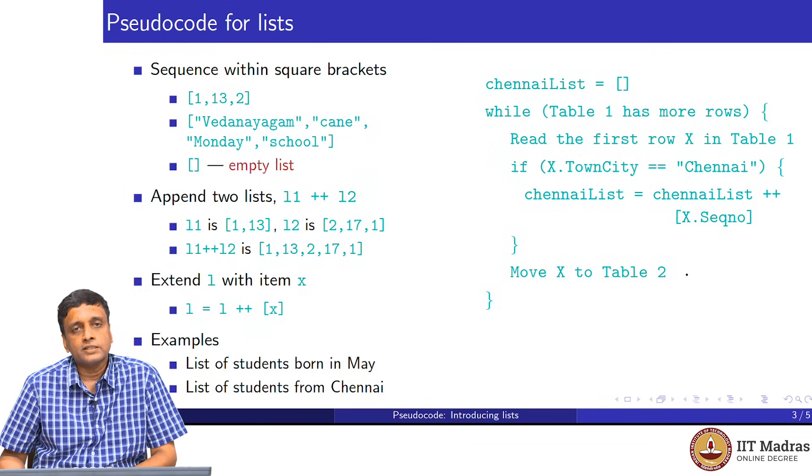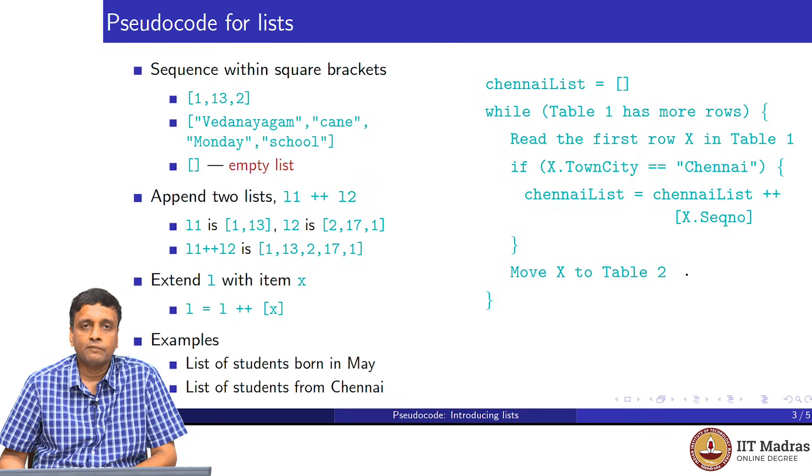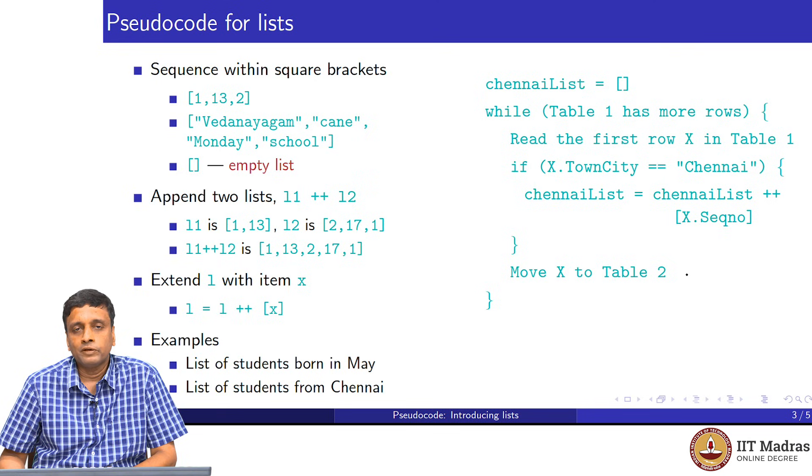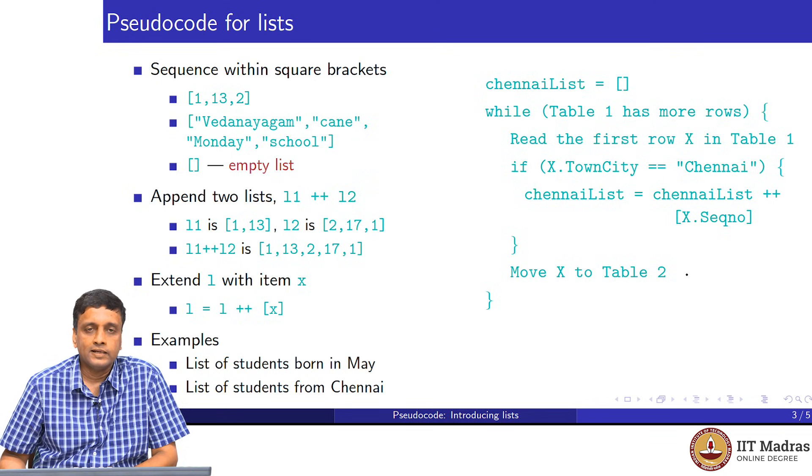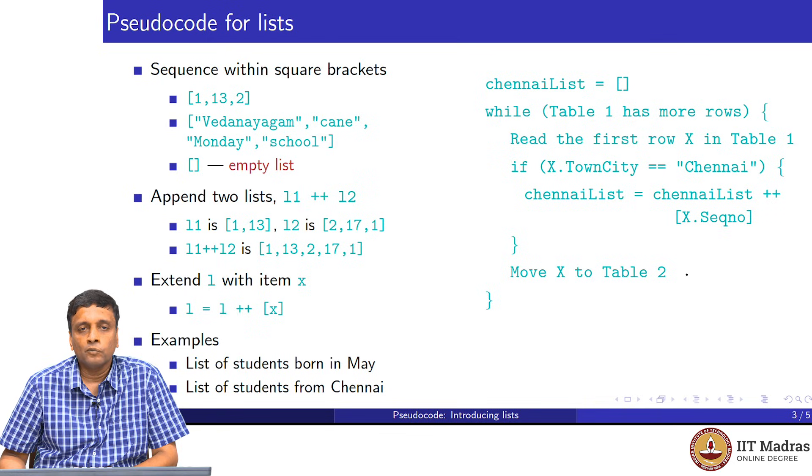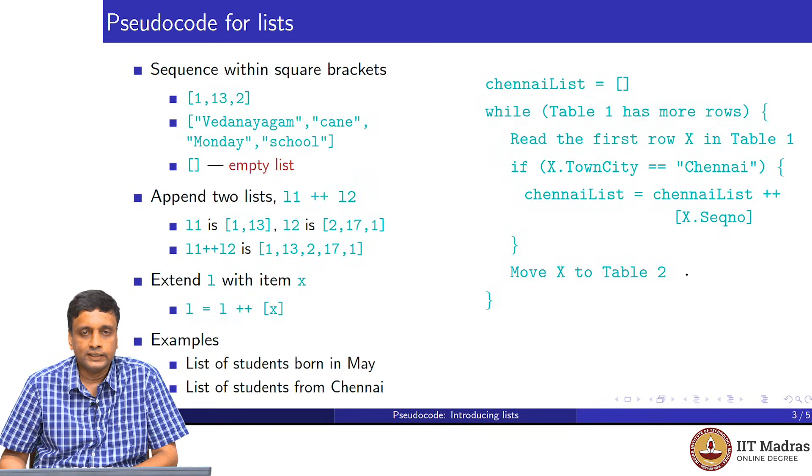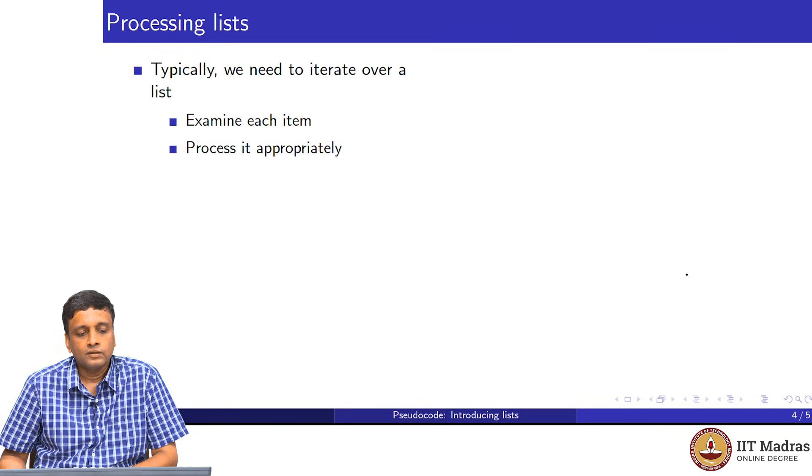You can do a similar thing, for instance, with another field. If you want to know which all students come from Chennai, then you again process the entire table from beginning to end. This time, we will use a different list, let us call it Chennai list. We initialize Chennai list to be empty. And then as we go along, whenever we see a card in which the town or city is Chennai, then we append that sequence number to Chennai list. Exactly the same as the one we did for date of birth in May.